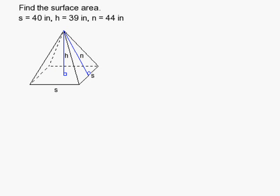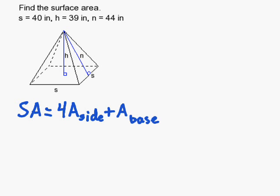So I'm going to now derive the formula for the surface area and it is four times the area of one side because we have four equal sides, plus the area of the base. And the area of the base is a square.